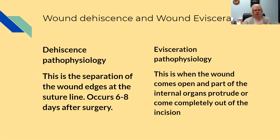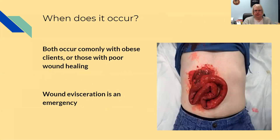Evisceration pathophysiology is when the wound comes open and part of the internal organs protrude or come completely out of the incision. Evisceration can be a continuation of dehiscence — the wound not healing leads to evisceration. Both occur more commonly with obese clients or those with poor wound healing.